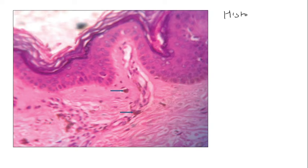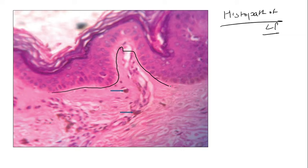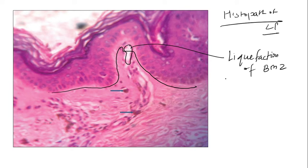then you would understand that this is the basement membrane zone. You will see that just at the level of basement membrane zone, you can see a free space over here. This free space that occurs basically in cases of lichen planus because of liquefaction. So the liquefaction of basement membrane zone leads to production of these spaces called as Max-Joseph spaces.